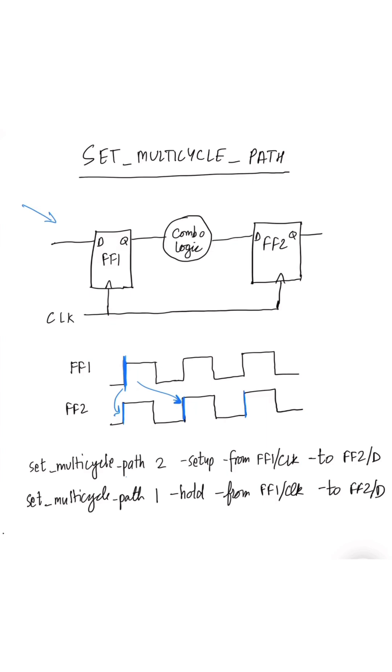So then it will be a two cycle path, so we will write set multi-cycle path 2, because we have two cycles to meet setup timing, hyphen setup because we are relaxing the setup timing analysis. And then we just give the timing start point and end point, so from flip-flop one clock pin to flip-flop two D pin.